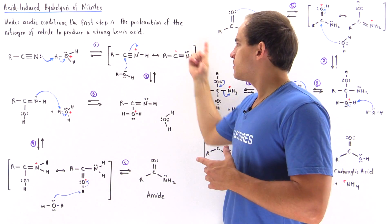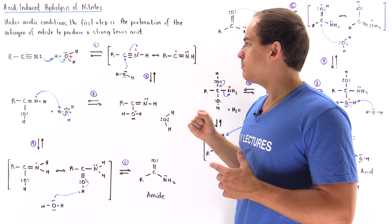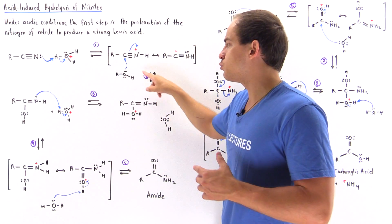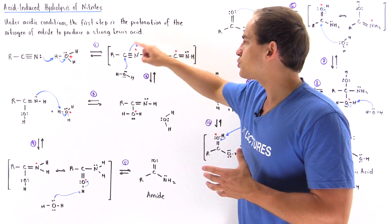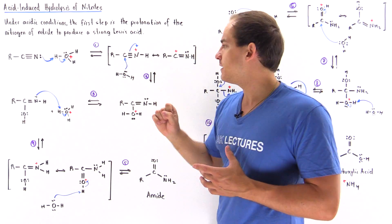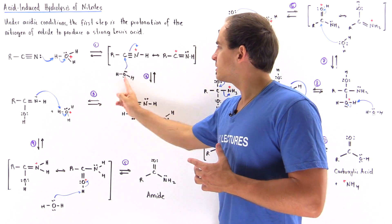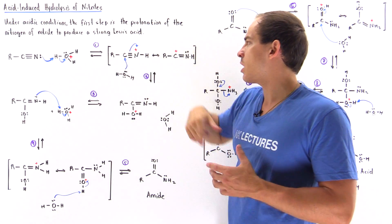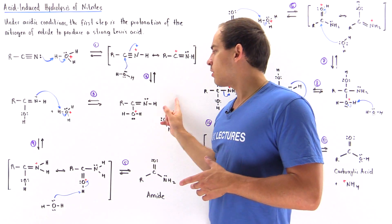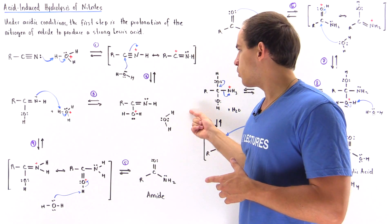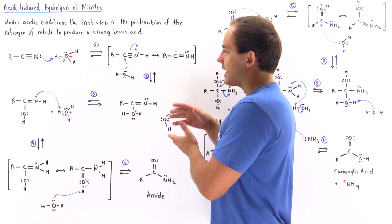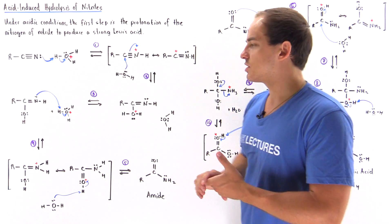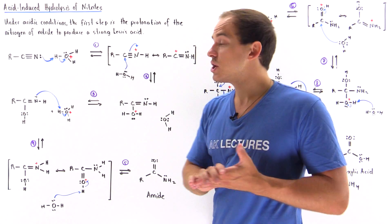Once we form this resonance-stabilized intermediate, the hydronium becomes a water molecule, and this water molecule now reacts with the strong Lewis acid nucleophilically. The oxygen attacks the carbon, displacing the two electrons and placing them onto our nitrogen, and we form this intermediate, with a water molecule present in close proximity.